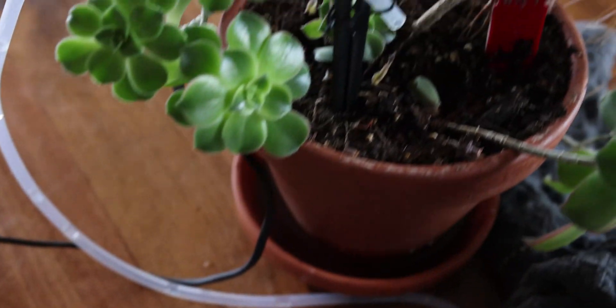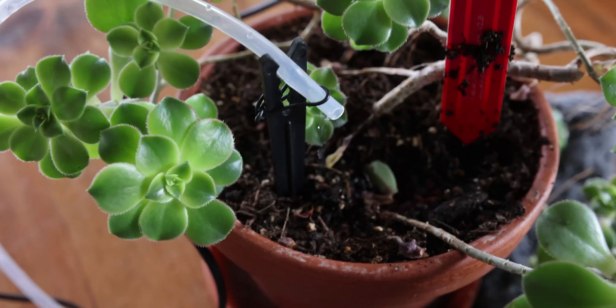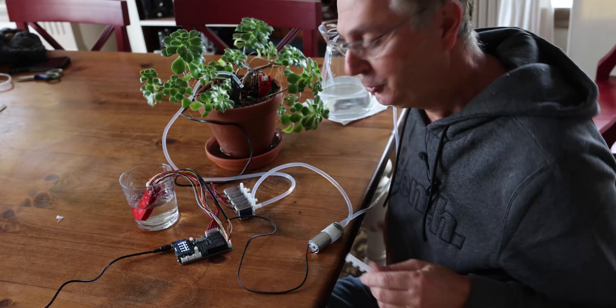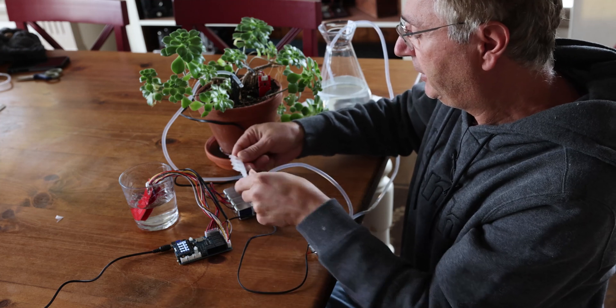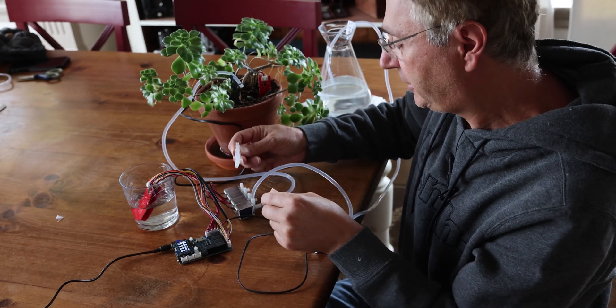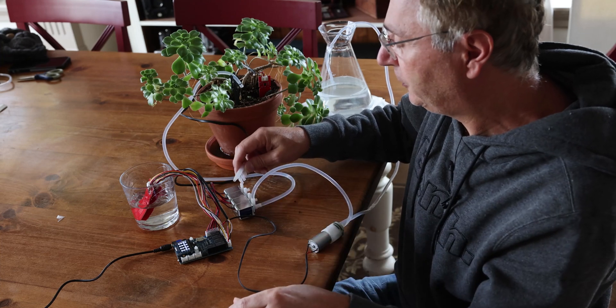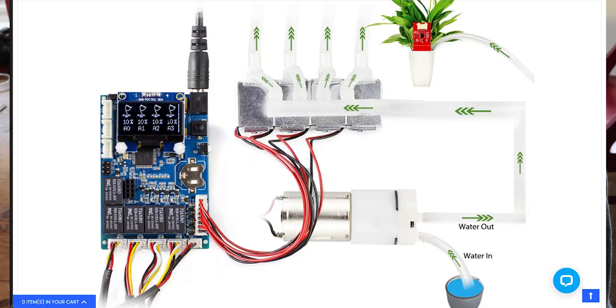This one is programmed that if it senses anything less than 20 percent, it will trigger the water. If you're going to use all four sensors, you have to use this little adapter that comes with the kit. You basically wire all the hoses for all four. You can see on this schematic how you would connect such a system and how to connect all the hoses to control all four plants.